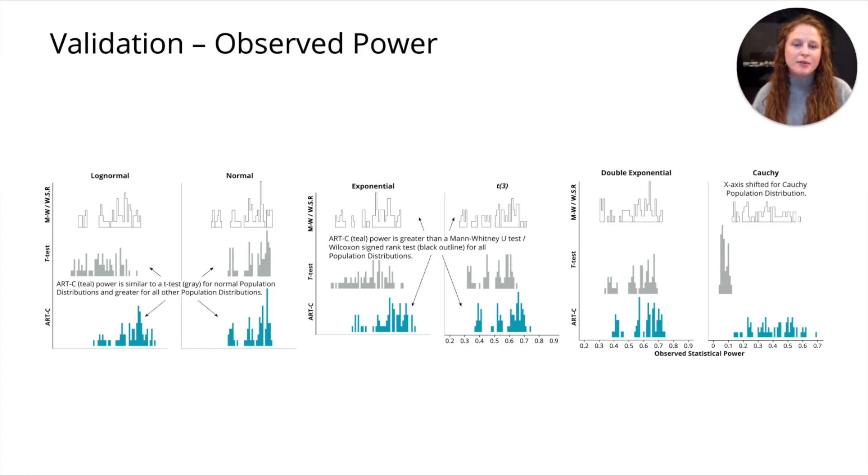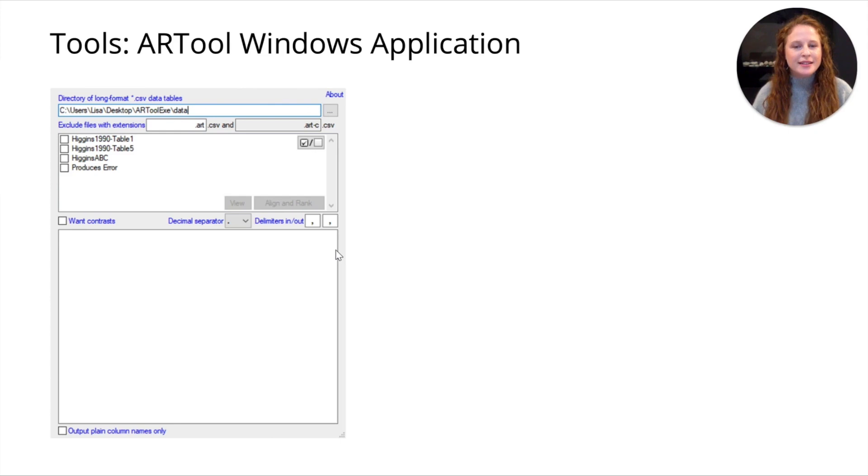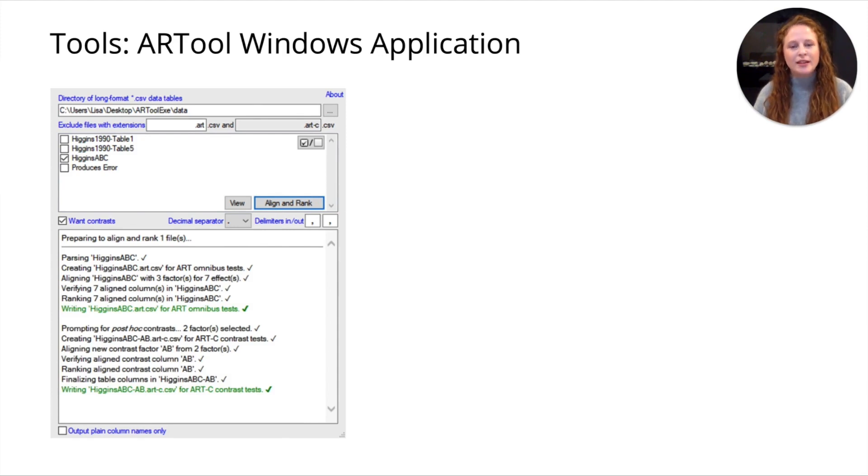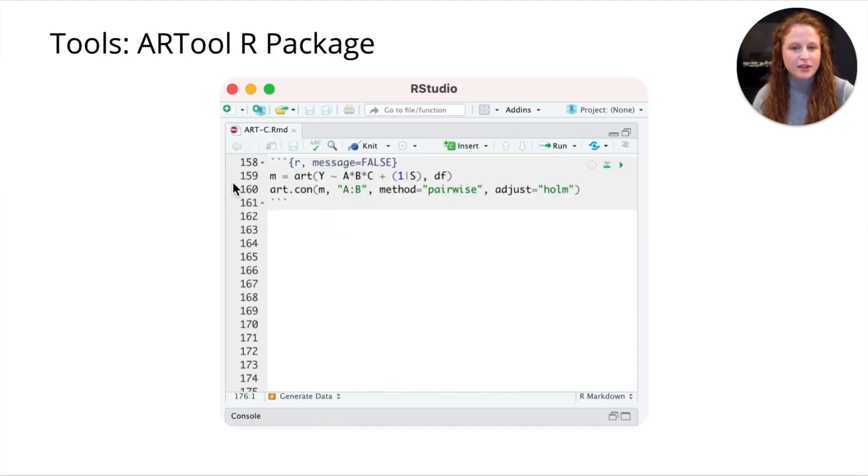In order to enable people to use ART-C, we extended two existing open source tools for ART. One is the ARTool Windows application that enables people who don't know how to use ART to still use ART and now ART-C. We've added this want contrast box that users can check, and after the data has been aligned and ranked for ART, they can select which factors levels they'd like to conduct contrast between, and the data will be aligned and ranked for those contrasts.